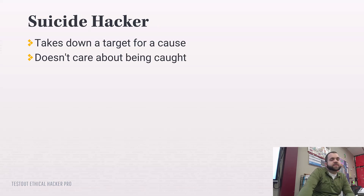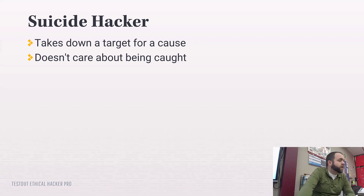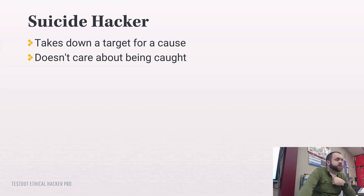The suicide hacker is like a kamikaze — they're taking down a target for a cause. They're going to attack, for example, for a political reason, and they don't care if they get caught because they believe wholeheartedly in their cause. It's kind of like the attack on the Capitol — they believed in a cause, didn't care about being caught, and probably didn't think they'd get in trouble for it.